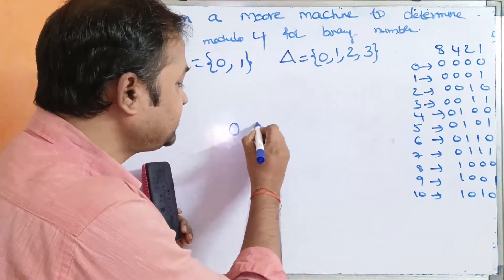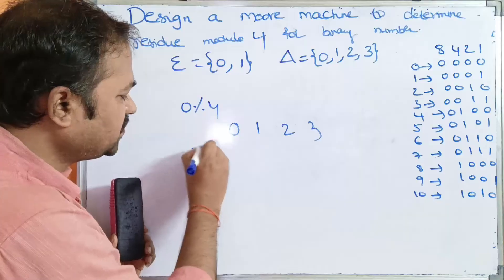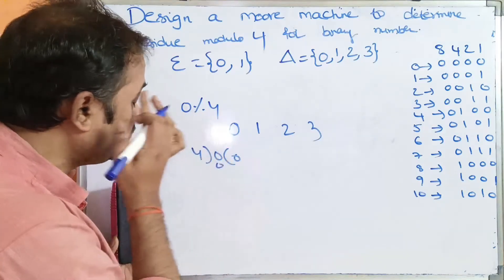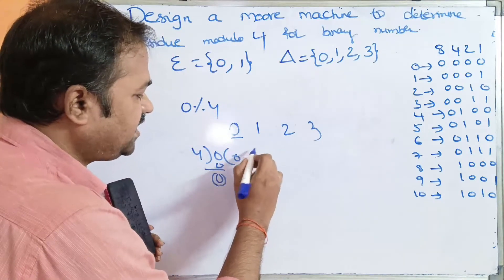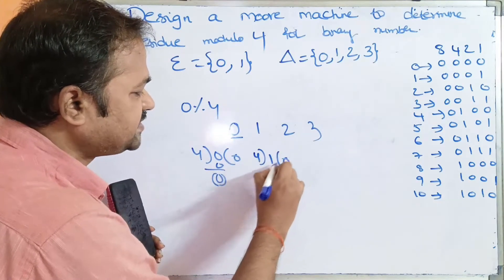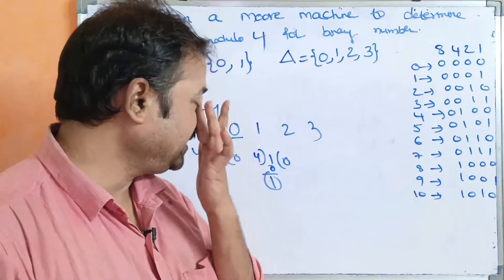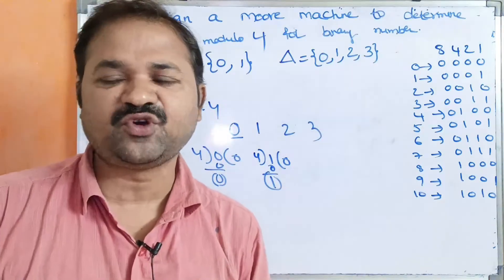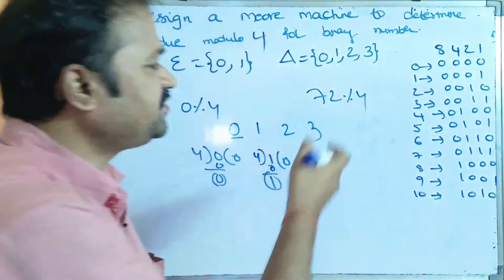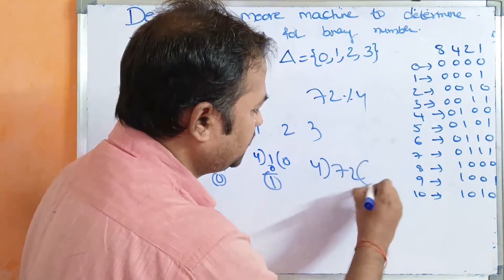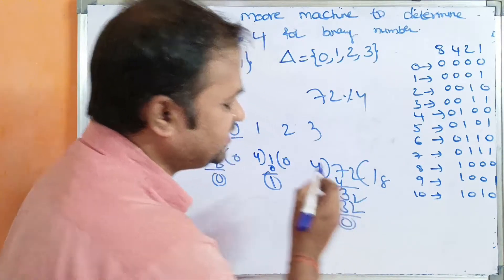Let us consider: 0 modulo 4 means 0, since 4 times 0 is 0 and 0 minus 0 is 0. Likewise, 1 modulo 4 is 1, 2 modulo 4 is 2, 3 modulo 4 is 3. So maximum we get these four digits only. For example, 72 modulo 4: 4 times 18 is 72, so the result is 0.